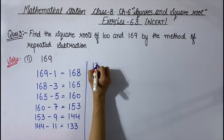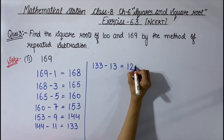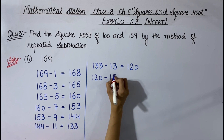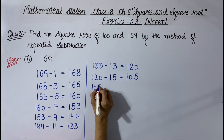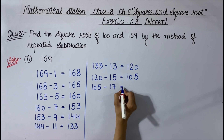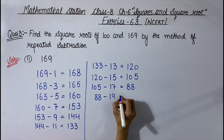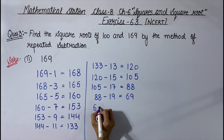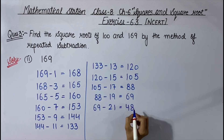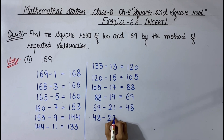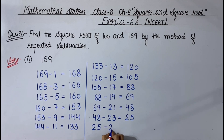Then from 144 we subtract the next odd number 11. It gives 133. After that, from 133 we subtract the next odd number 13, giving 120. From 120 we subtract the next odd number 15, giving 105. Then from 105 we subtract the next odd number 17. It will be 88. After that, from 88 we subtract the next odd number 19. It gives 69. Then from 69 we subtract the next odd number 21. 69 minus 21 is 48. Then from 48 we subtract the next odd number 23, giving 25.